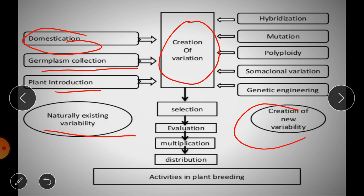Alternatively, we can go for the creation of new variability by means of hybridization — by crossing two different plants or populations having different genetic constitutions. Also by mutation breeding, polyploid breeding, somaclonal variation, and genetic engineering, we can create new variation. This is the first step — the creation of variation. Once we have variation, we can move on to the next step, which is selection.